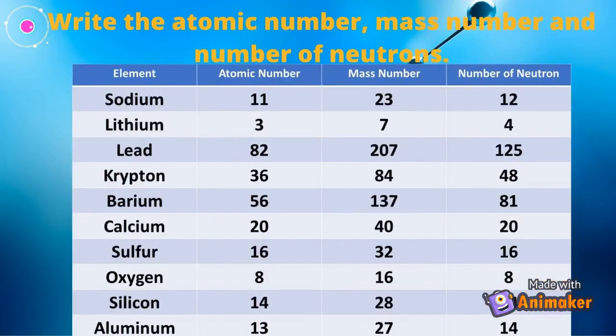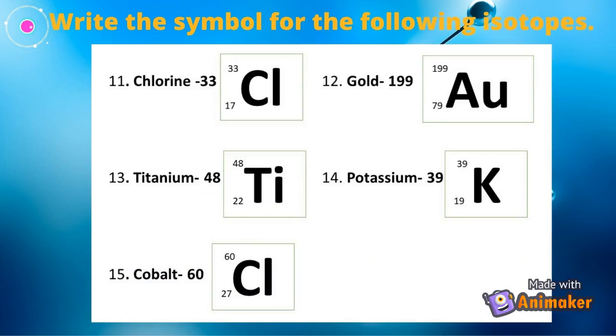In this activity you will write the atomic number, mass number, and number of neutrons. Write the symbol for the following isotopes.